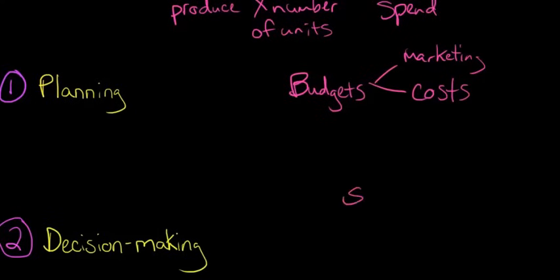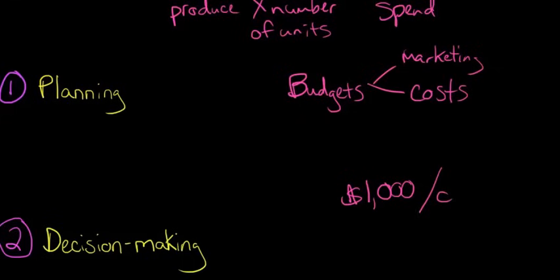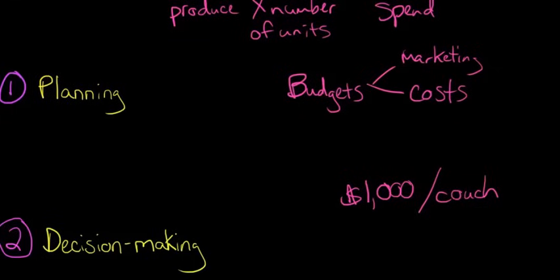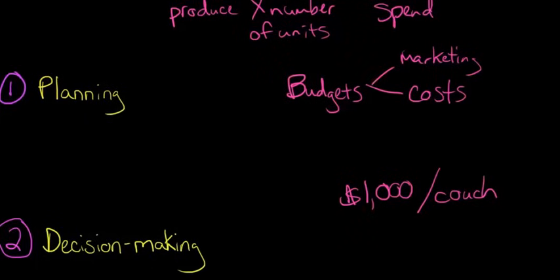Let's say somebody says, we'll give you $1,000 per couch. You manufacture furniture. So you got couches, $1,000 per couch a customer offers you and they say that they'll buy 500 couches.